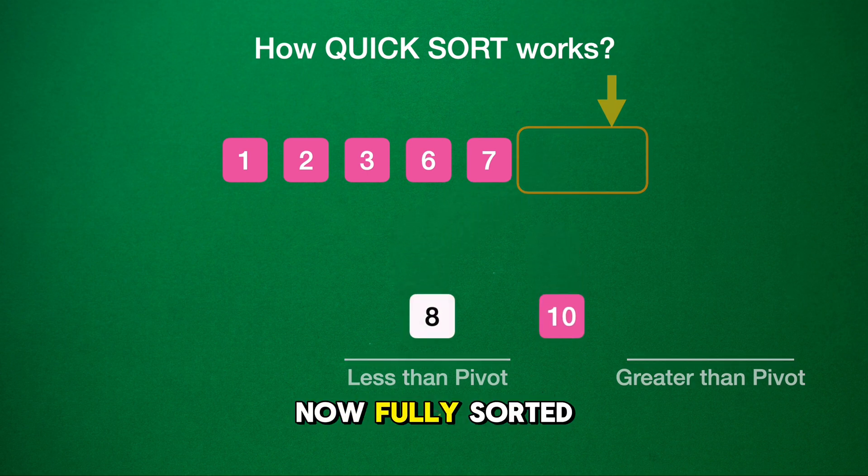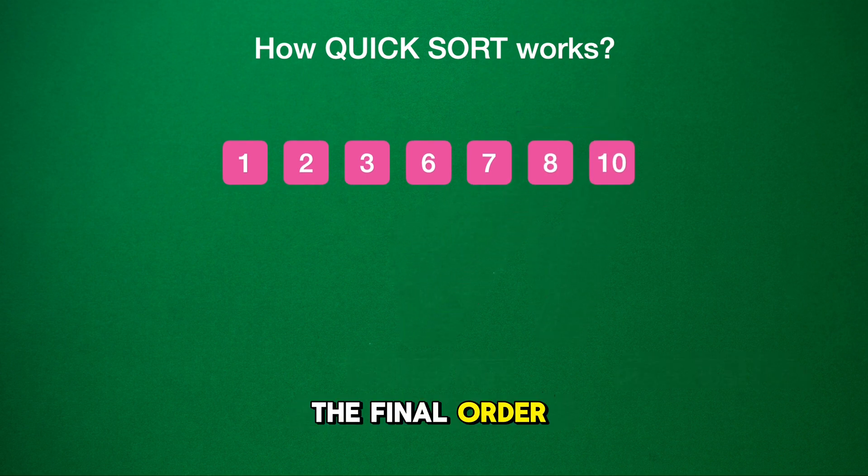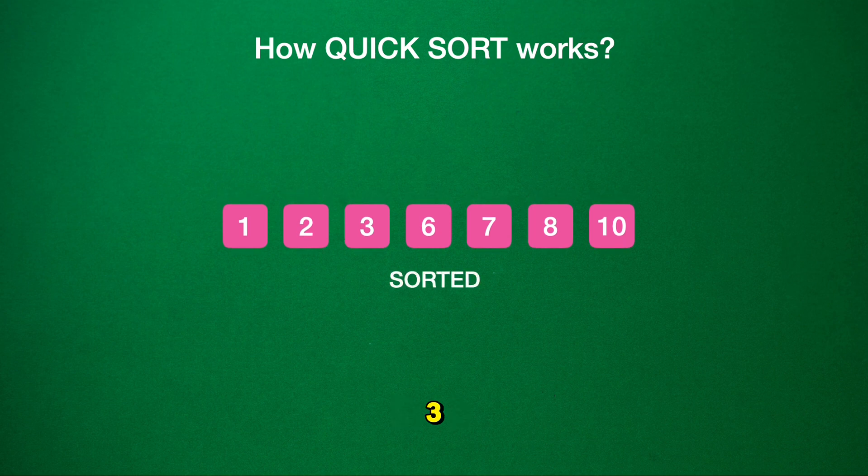Our array is now fully sorted. The final order is 1, 2, 3, 6, 7, 8, and 10. QuickSort has done its job.